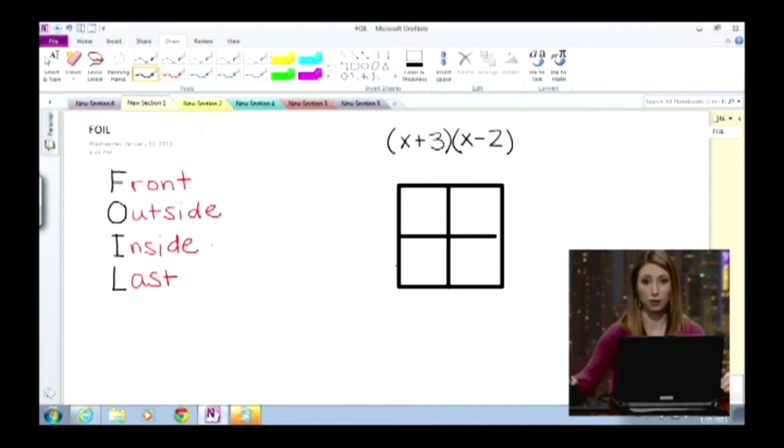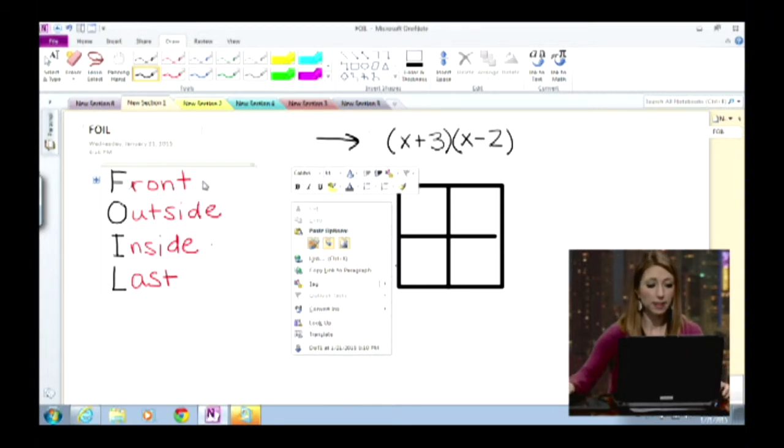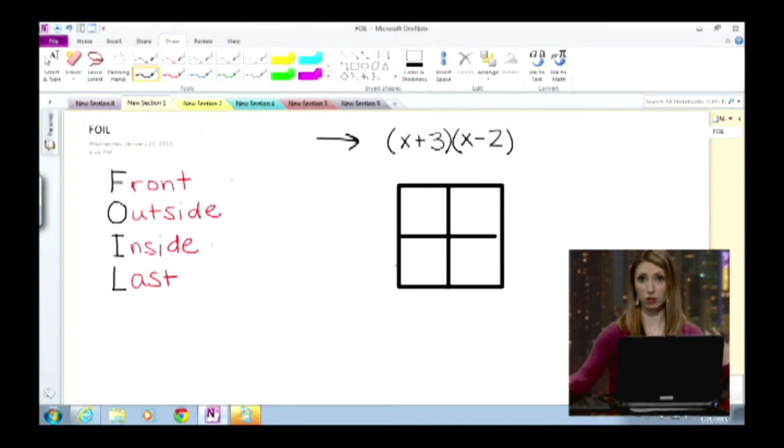Binomials are just, so if you look at my example up here where it says x plus 3 times x minus 2, a binomial is just something that has two terms. And this acronym helps us remember the order of which to multiply these things. So if I were using the acronym, what I would do is I would do my front two terms first, which my front terms in this case are x and x. So I would do x times x, which is x squared.